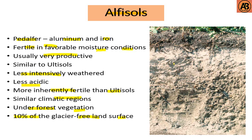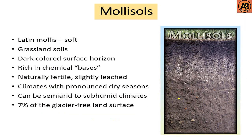Alfisols occupy about 10% of the Earth's glacier-free land surface. Next are Mollisols. Mollisols come from the Latin mollis, meaning soft. They are prairie or grassland soils that have a dark-colored surface horizon. They are rich in chemical bases such as calcium, magnesium, etc.